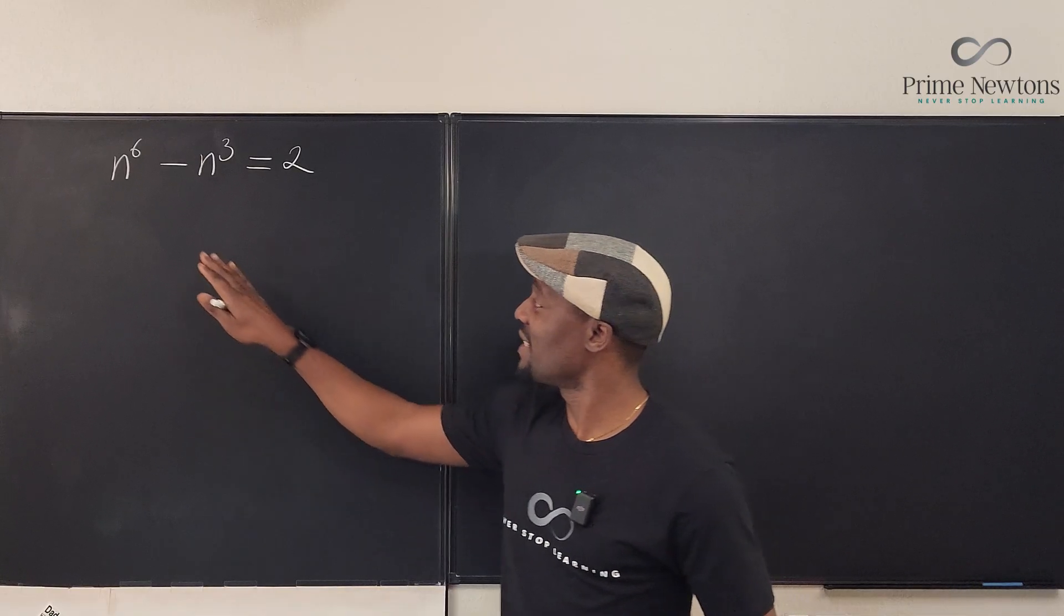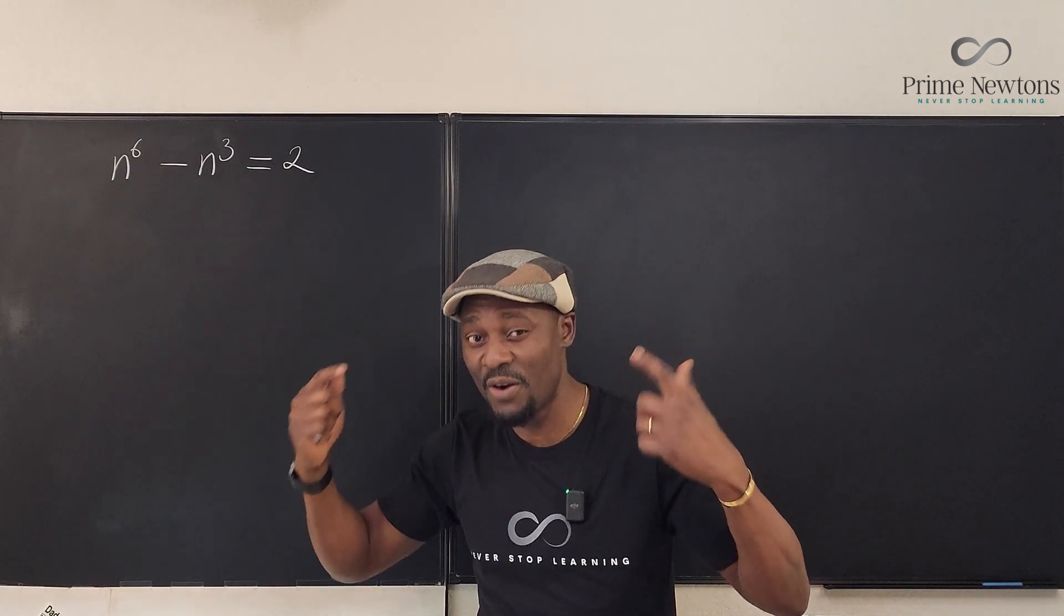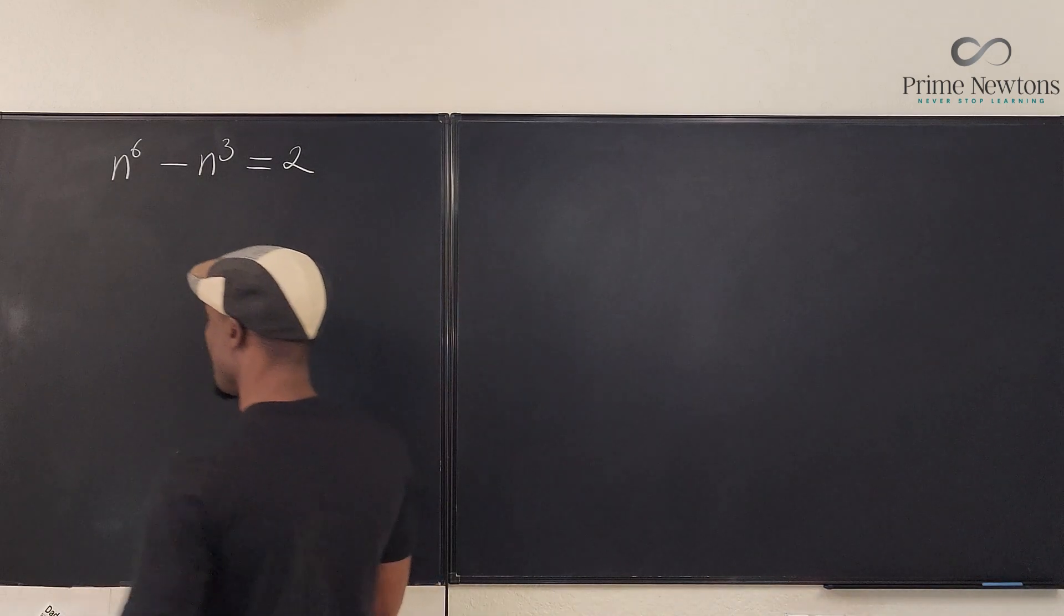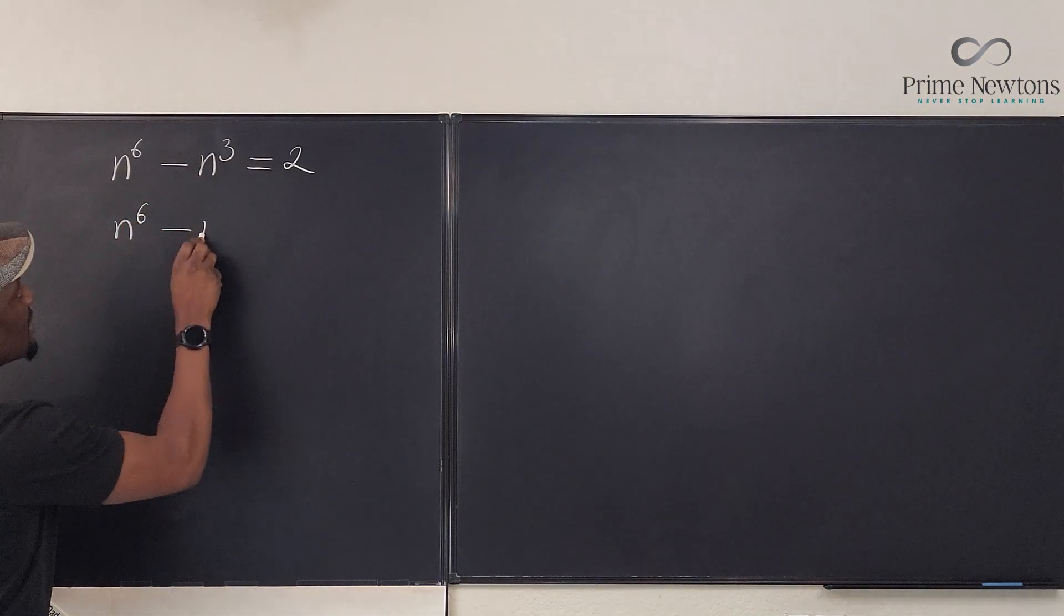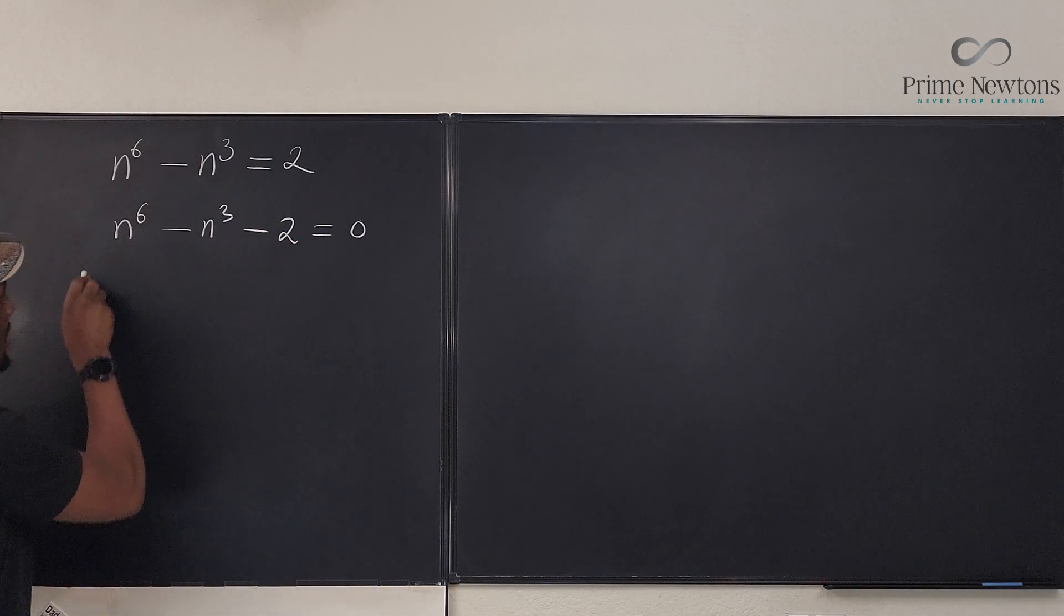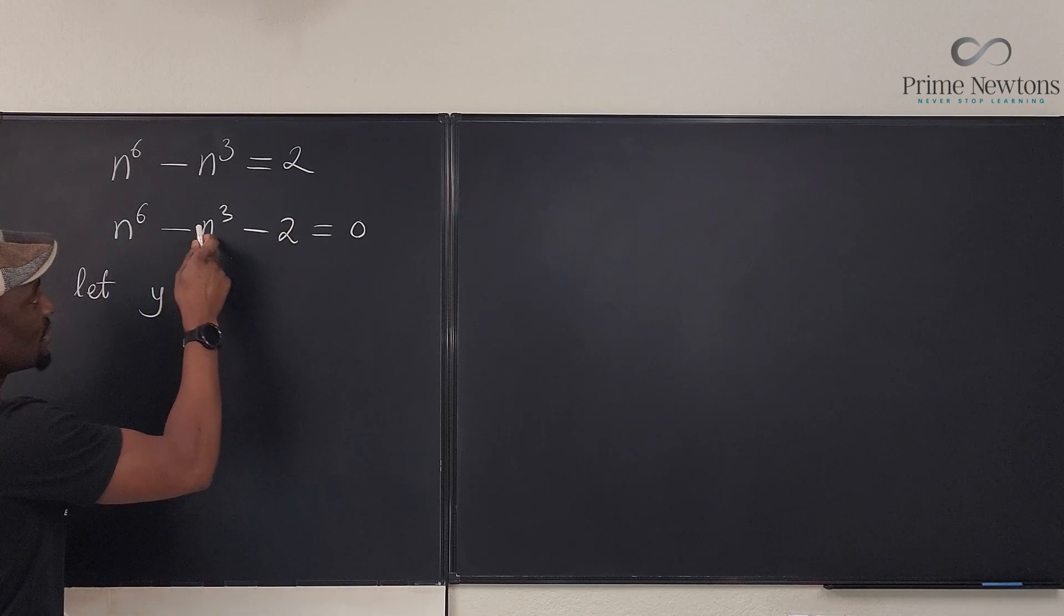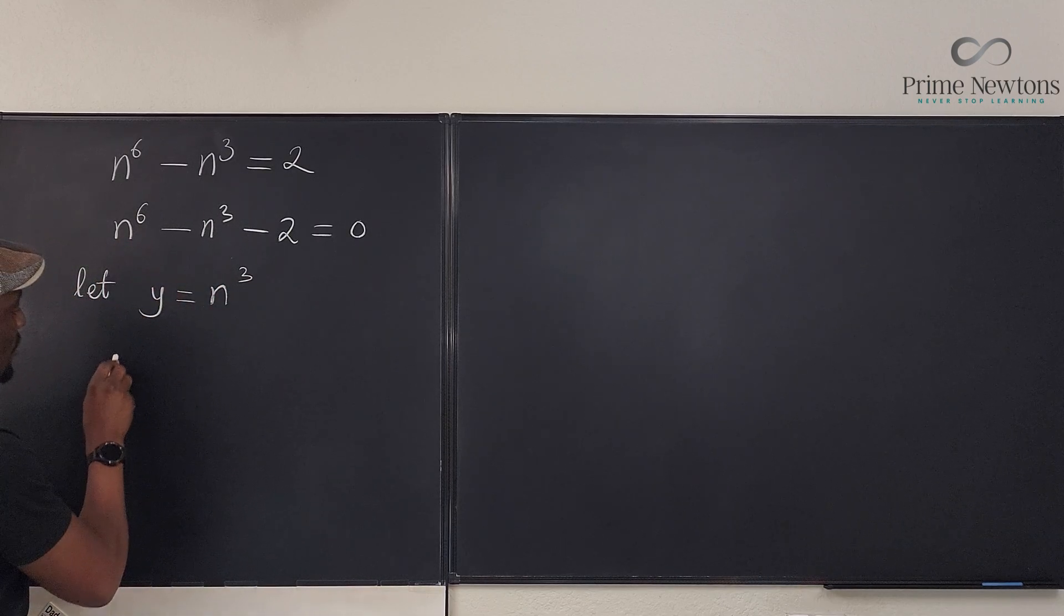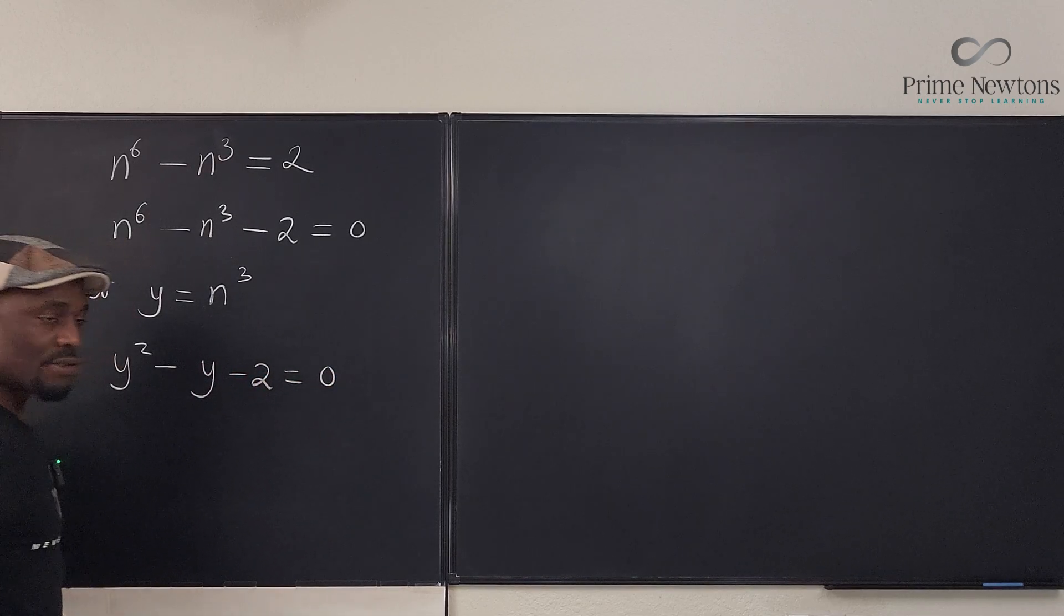Obviously, this problem was designed in such a way that the degree of this is twice the degree of this. And that's when you start thinking of a quadratic. So, let's start and say that we have n^6 - n^3 - 2 = 0. And then we say let y be equal to this, which is the lower degree, n^3. That means this will be y squared. So, we have y^2 - y - 2 = 0.